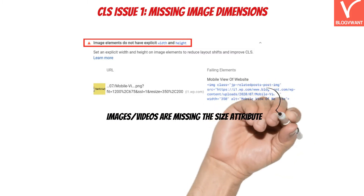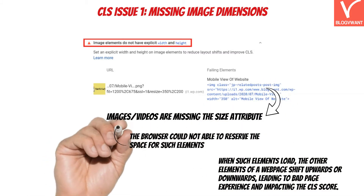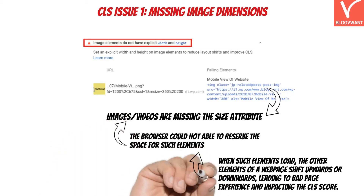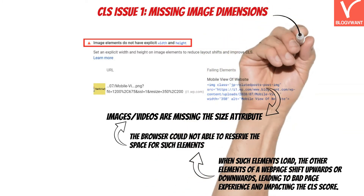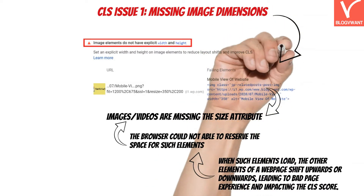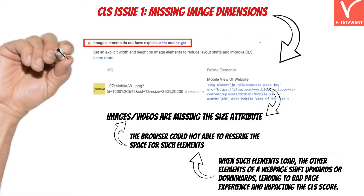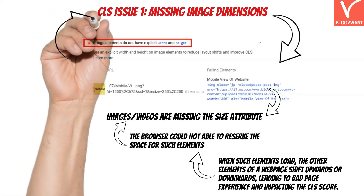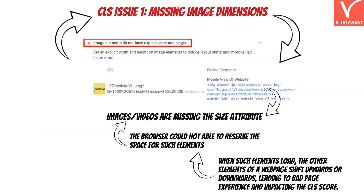Are you facing this error — 'image elements do not have explicit width and height' — in the Google PageSpeed testing tool? This is happening because some of the images or videos used on your website are missing the size attribute. When no width and height is defined explicitly, the browser cannot reserve space for such elements. At the moment such images or videos load, other elements like HTML text or CSS shift upwards or downwards, leading to a bad page experience and impacting the CLS score.